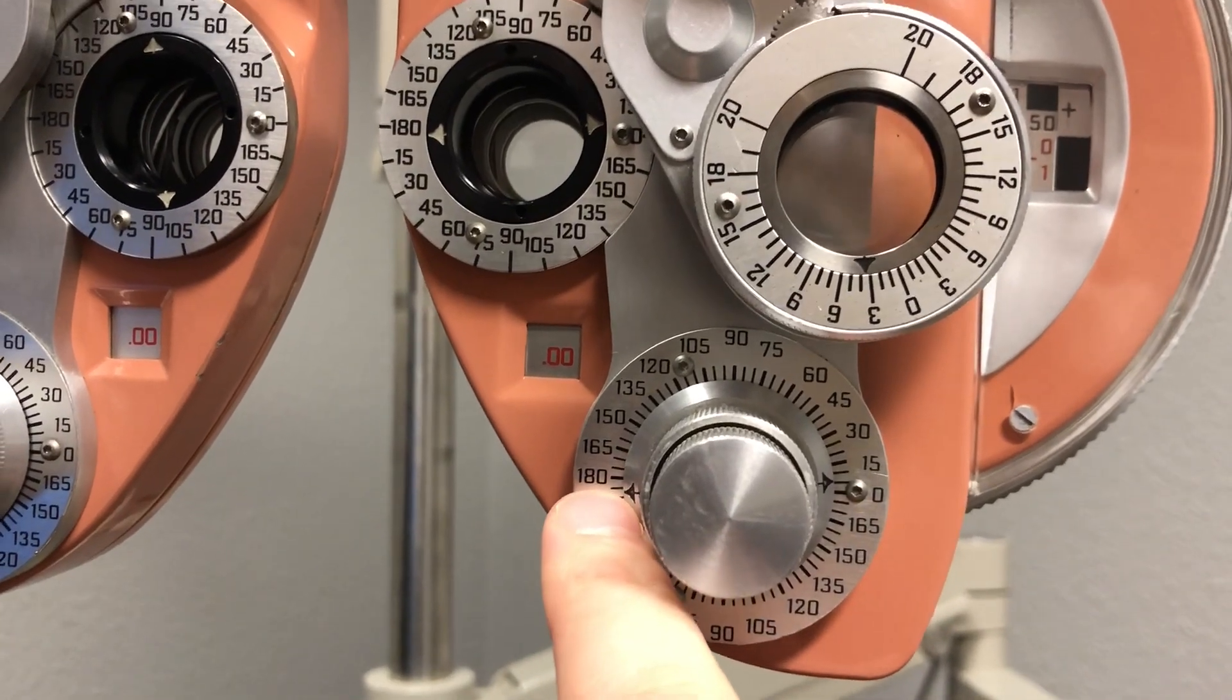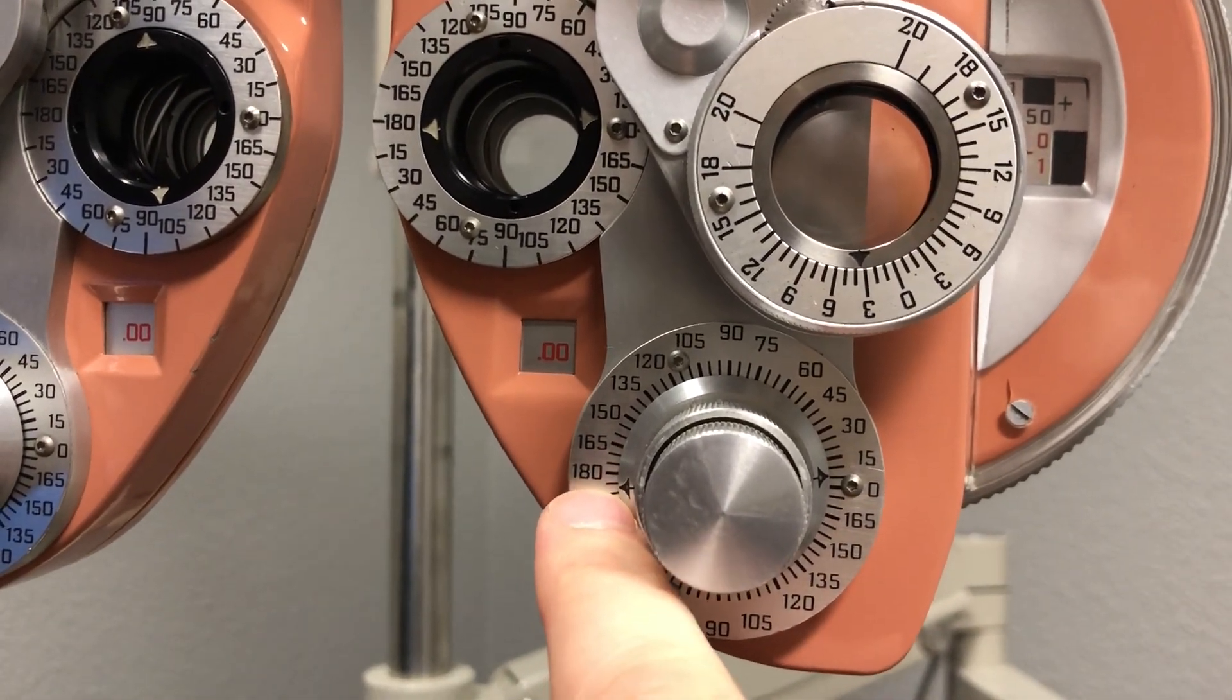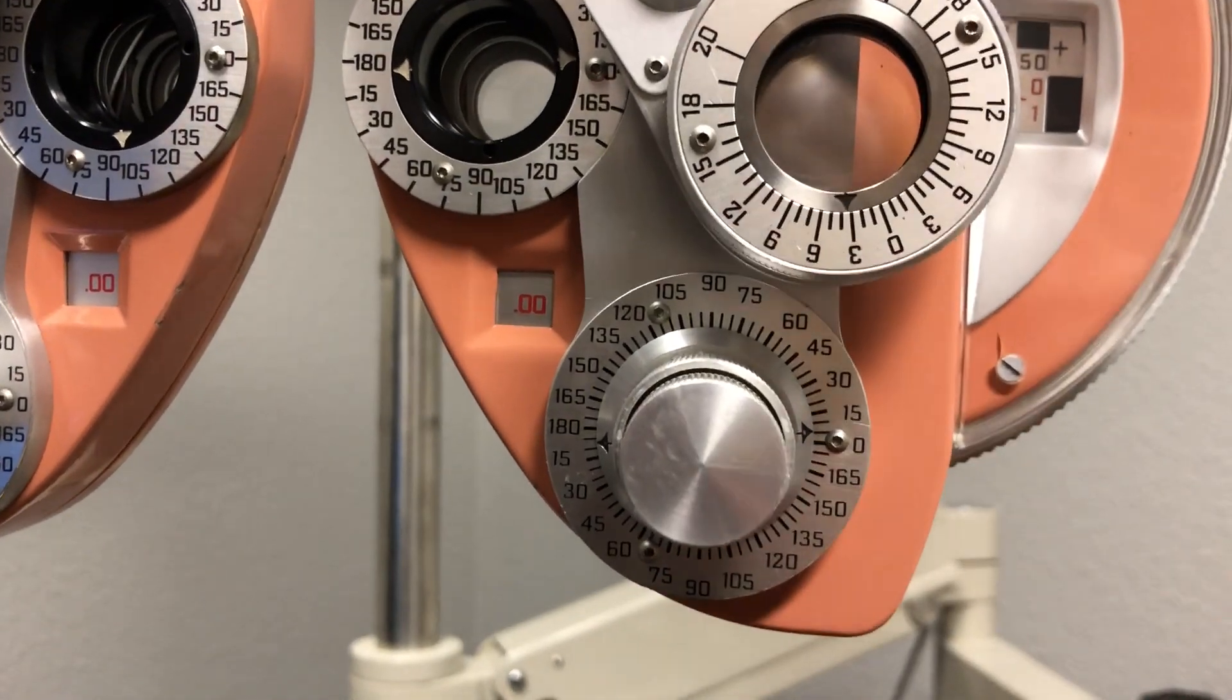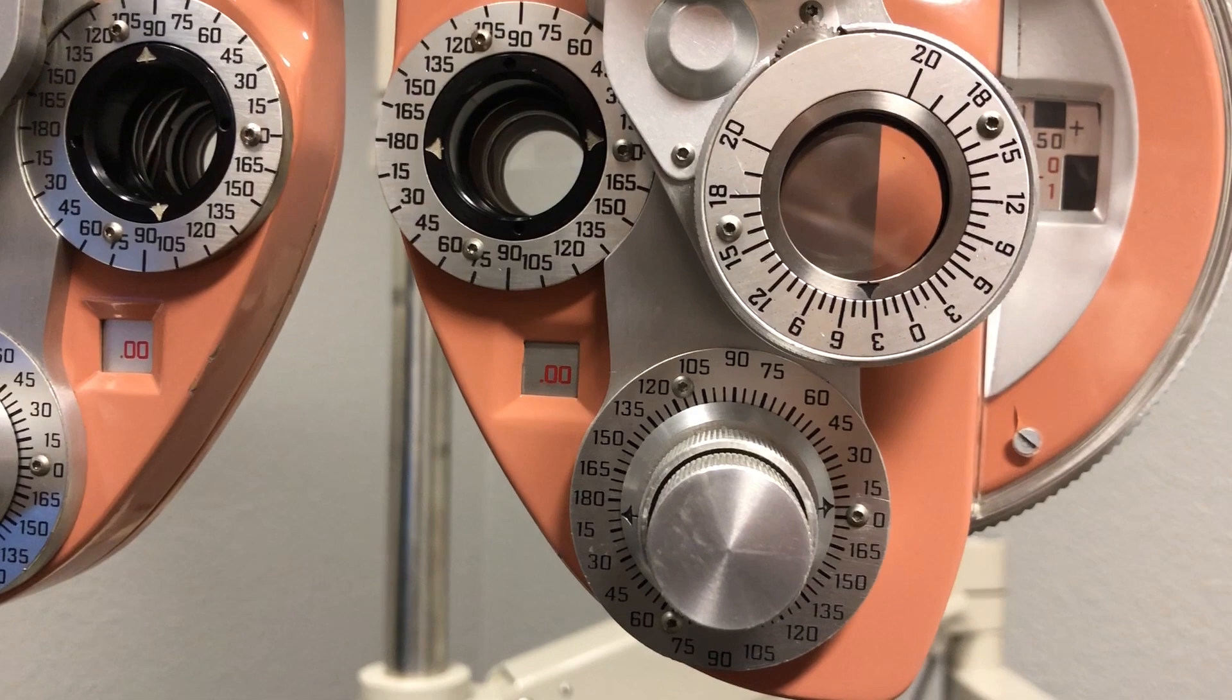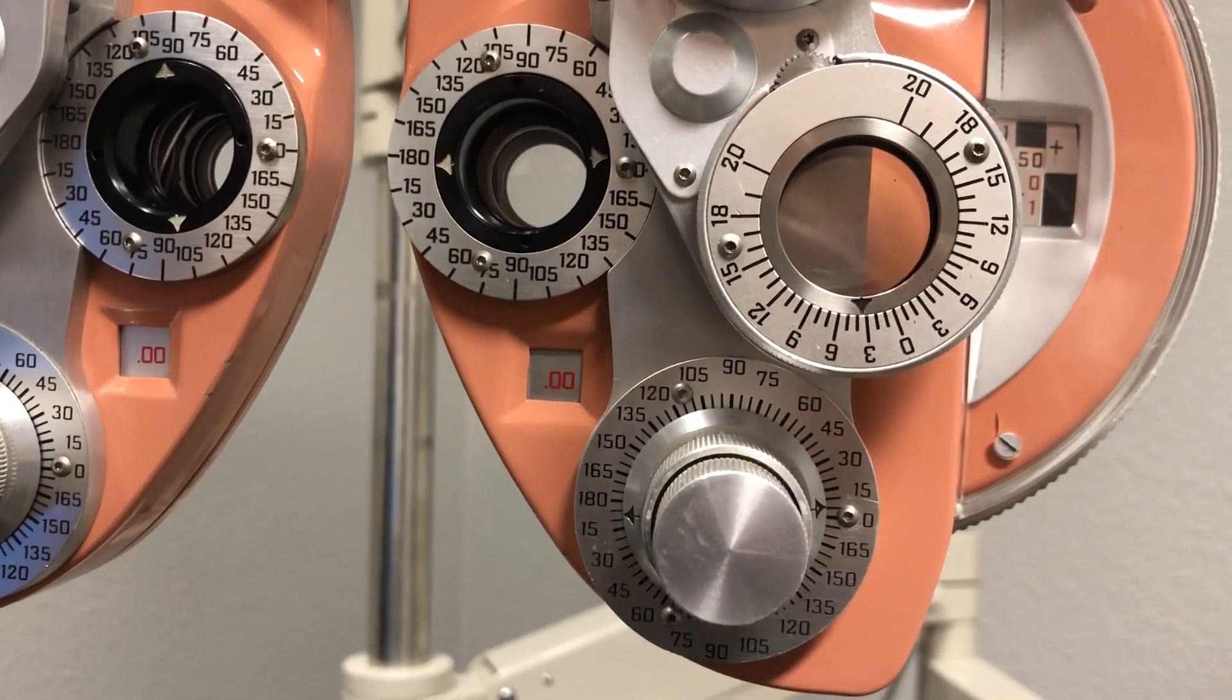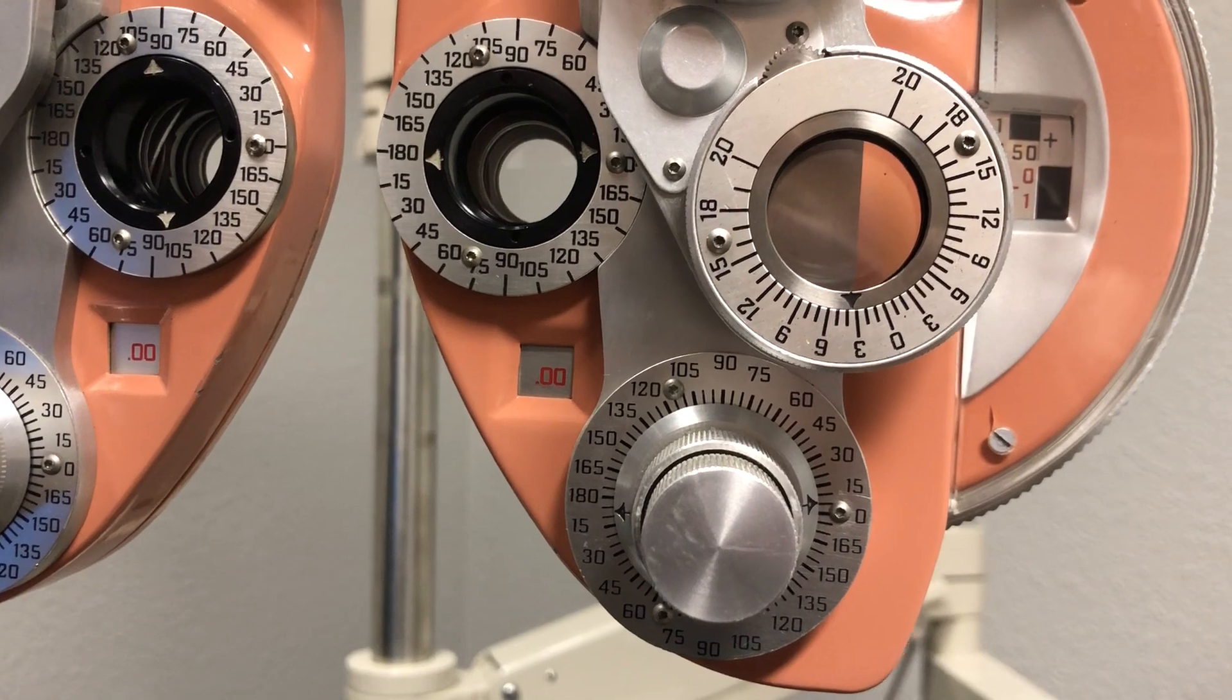So if you're looking there, you'd think it would be 186, but really what we do is write it down as 6. That's your second two numbers for your glasses prescription: cylinder and cylinder axis.